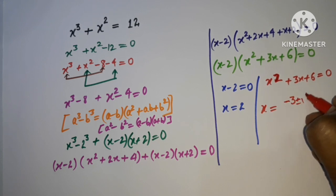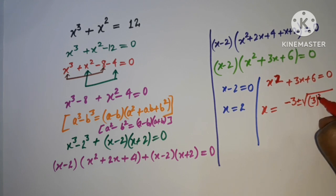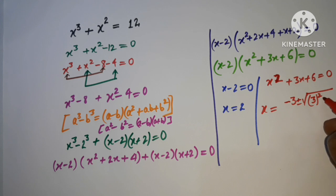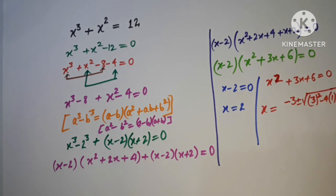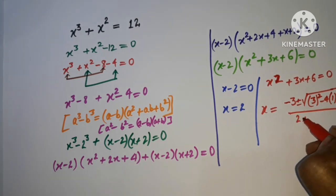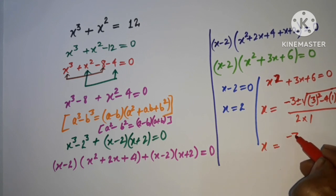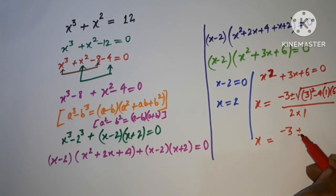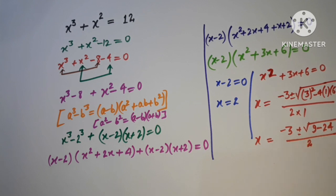Here b = 3, a = 1 (coefficient of x²), and c = 6. Substituting: x = (-3 ± √(9 - 24)) / 2, which gives x = (-3 ± √(-15)) / 2.